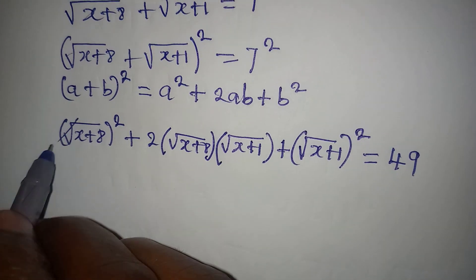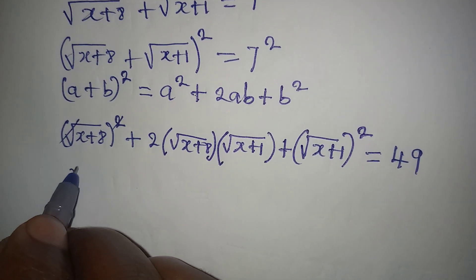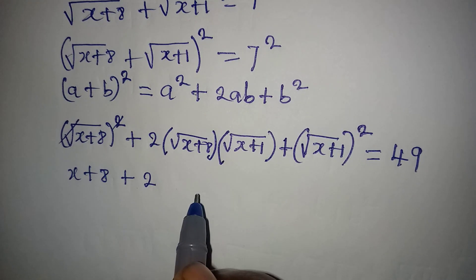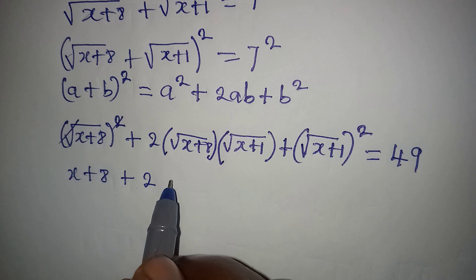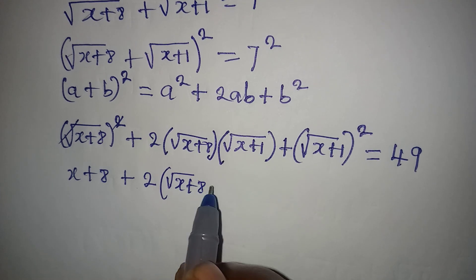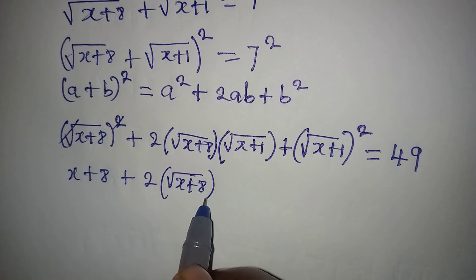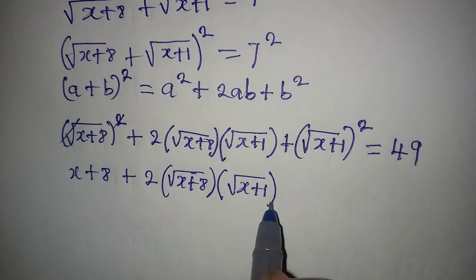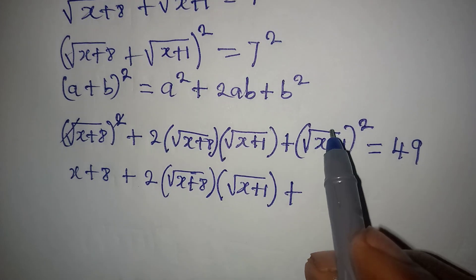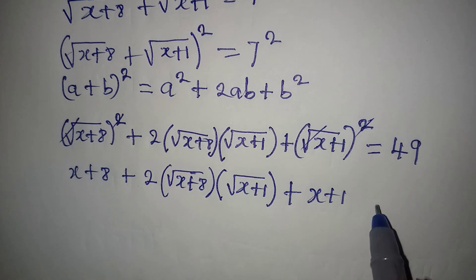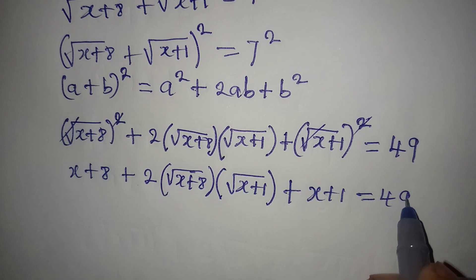From here, the squares cancel the square roots. I have (x + 8), then plus 2 times square root of (x + 8) times square root of (x + 1), then plus (x + 1), equal to 49.